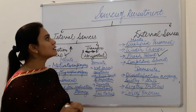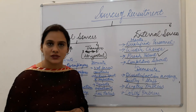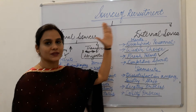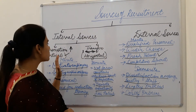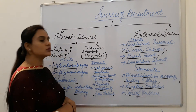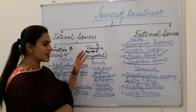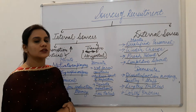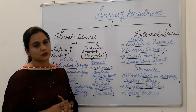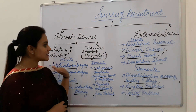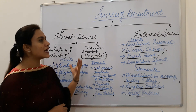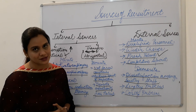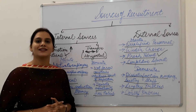So students, this was about the sources of recruitment — the two types being internal and external. Through internal sources you can promote or transfer employees within the same positions, and through external sources you invite applications from outside. I have explained to you the merits and demerits of both internal and external sources. Thank you students and have a nice day.